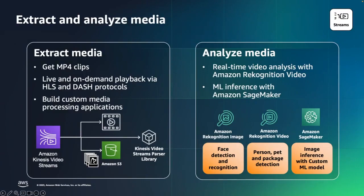Other options to analyze your media include a direct integration with Amazon Rekognition Video through a feature called Streaming Video Events, or SVE for short. Amazon Rekognition Video's Streaming Video Events service provides automated person, pet, and package detection, allowing customers to build connected home solutions such as smart doorbells to automatically detect when packages were delivered, when a pet is wandering by, or when a person has approached your front door. Otherwise, you can use our custom APIs to extract media and build your own custom machine learning models through Amazon SageMaker, host those models in SageMaker, and use them for custom machine learning inference as part of your media processing workflows.